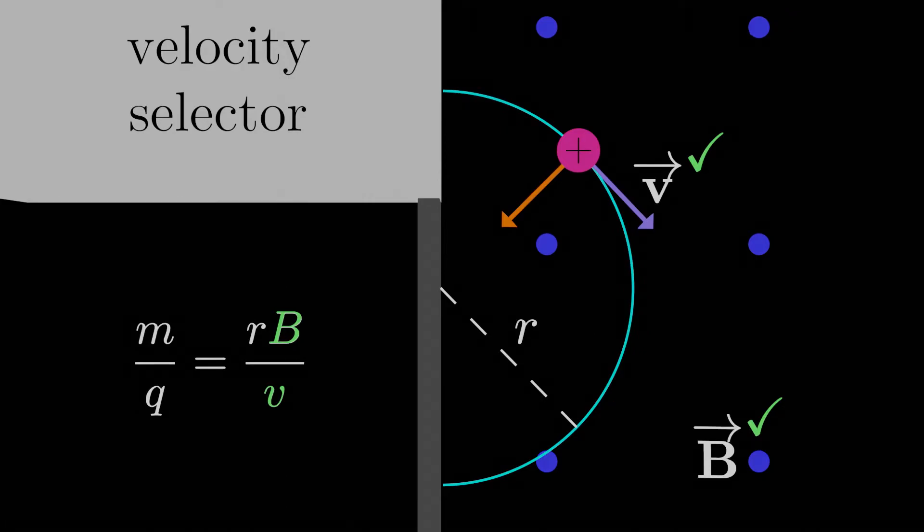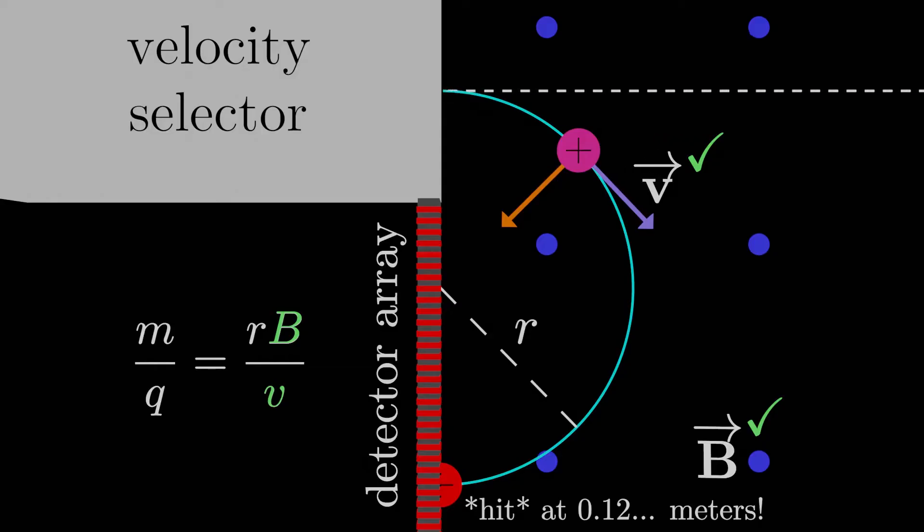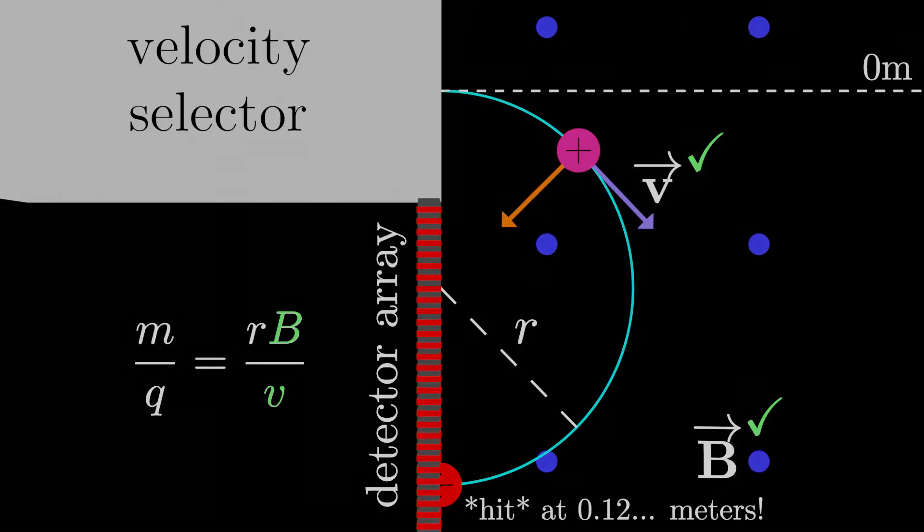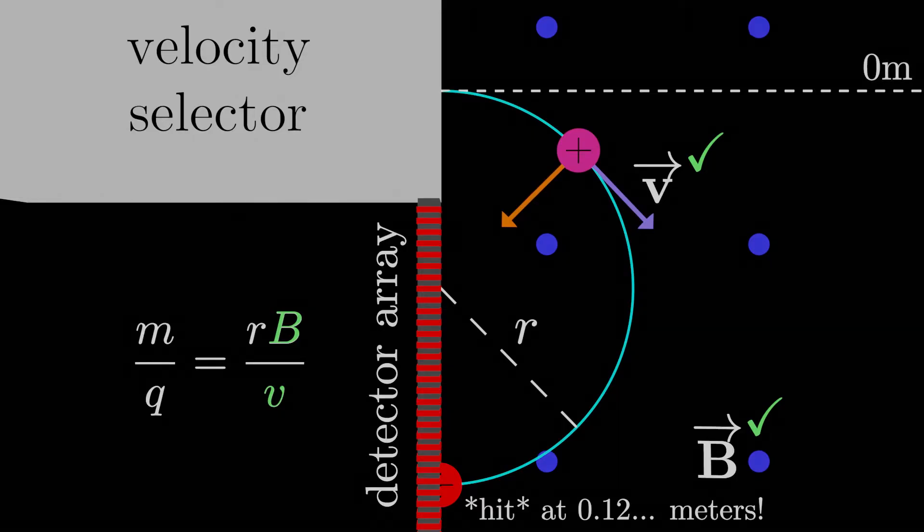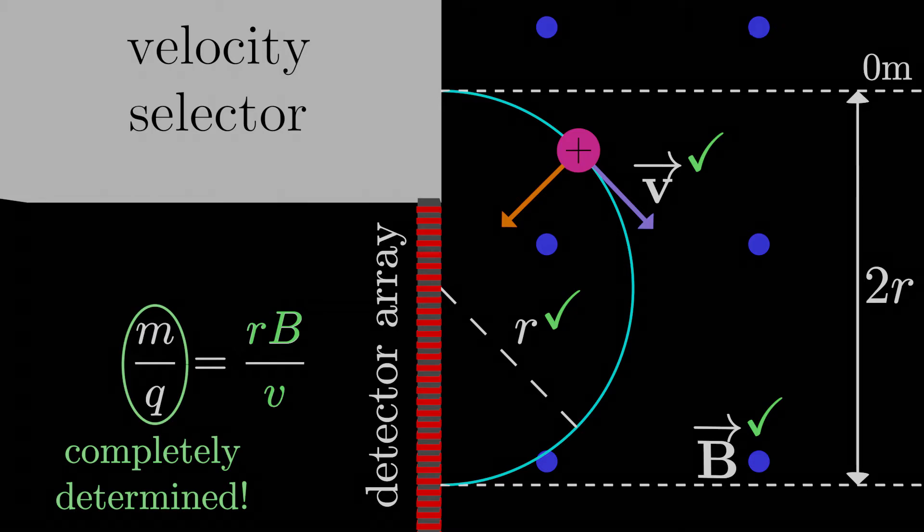Well, the way we design our mass spectrometer here is we have a detector array on the sides that can determine where a particle hits. It's like an experimental game of Battleship. So if the array starts at, say, 0 meters out of the opening, it can digitally determine the distance from that opening to the place where a particle hits, and then that distance is just the diameter of the circle of motion, it's 2 times the radius. So that means r is experimentally determined for us as well. In that case, I've sneakily set up our equation here so that everything on the right hand side is known, which means we can completely determine the mass to charge ratio of whatever particle was fed in.